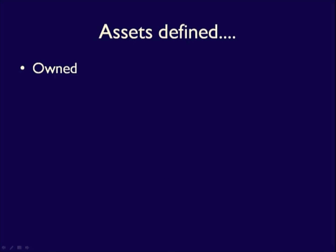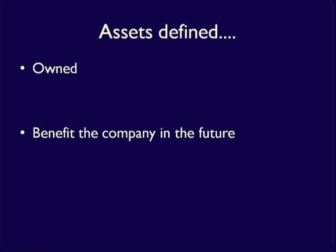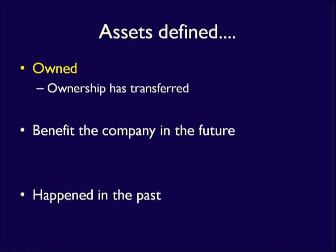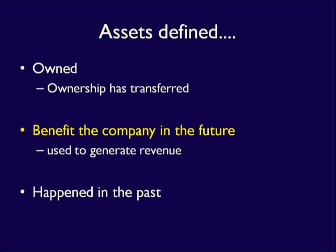Assets have three characteristics. Assets are owned, they provide future economic benefit, and they are due to past events. For example, my cell phone is an asset because I own it. Assets will be used, either directly or indirectly, to help the business. There was an event in the past that transferred ownership of the asset to the business. To summarize, everything a business owns is considered an asset — a resource obtained through a past event that will benefit the business in the future.